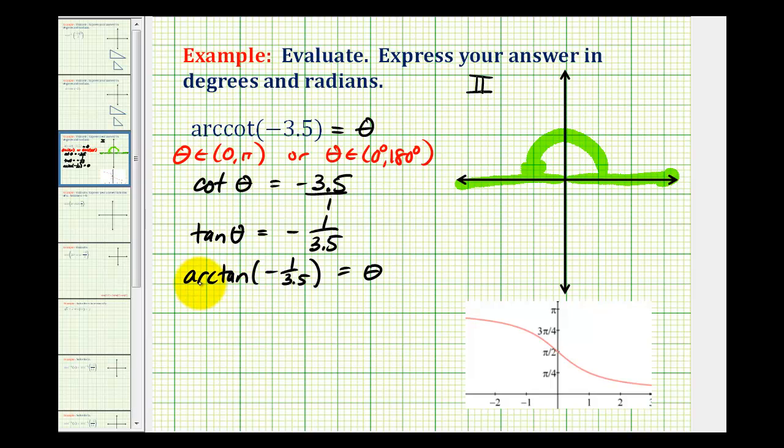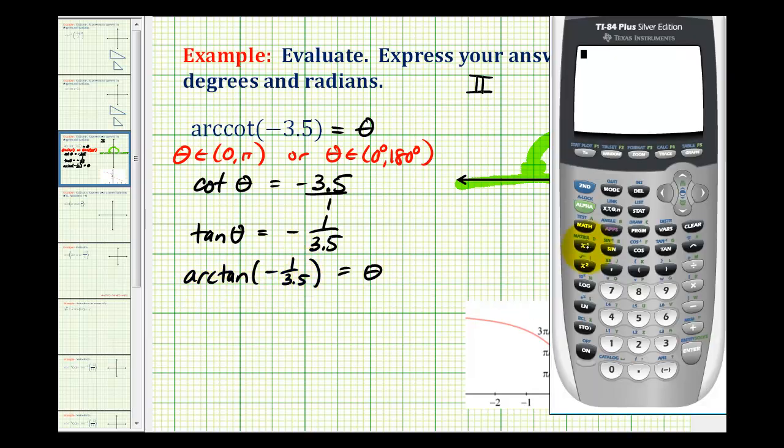So now we'll go to the calculator. Let's do this in degrees first, so we'll press the mode key. Notice how degree is highlighted, so we'll go back to the home screen. And now we're going to press second tangent for arc tangent or inverse tangent. And now we'll type in negative 1 divided by 3.5. And notice how the calculator gives us approximately negative 15.95 degrees.